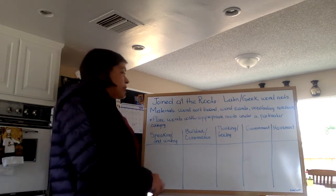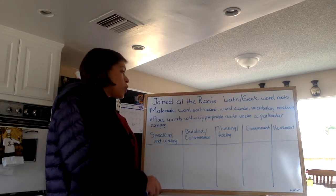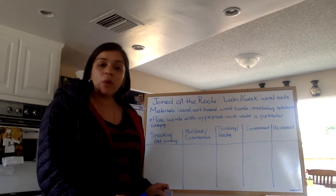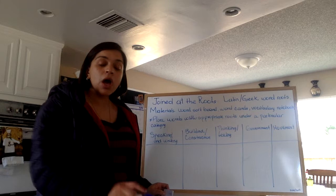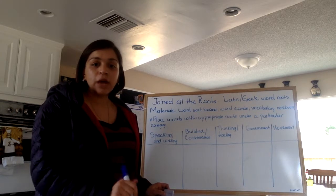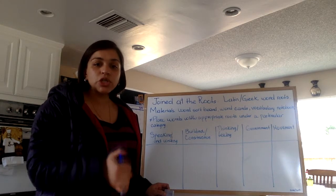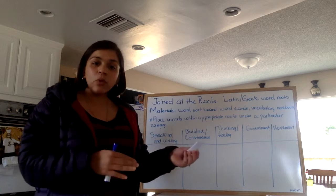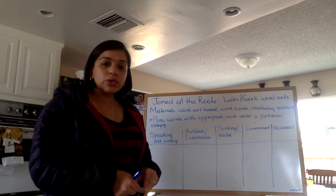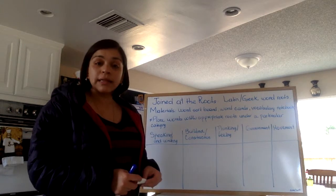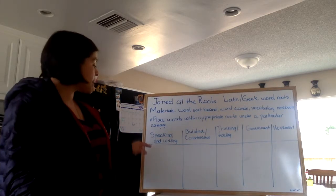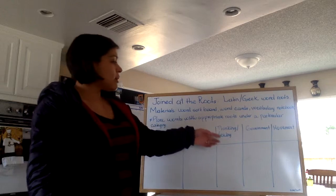What you do here is place your words with the proper roots under a particular category. In the appendix of our book, Words Their Way, you'll find a very extensive list of Greek and Latin words. You create categories — it's entirely up to you which ones you choose — and students find out the meaning of the Latin or Greek root and place the words in the proper category. I have here: speaking and writing, building and construction, thinking, feeling, government, and movement.